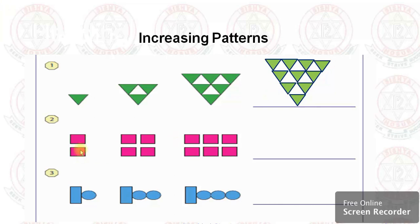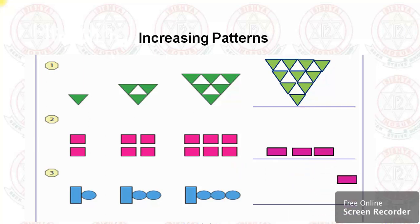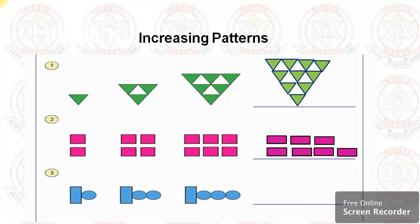How many rectangles? Two pink rectangles here, four here, six here — so it is like the two-times table: two, four, six. These are even numbers. So what will be next? Eight will come — two, three, four, five, six, seven, eight — so it is eight rectangles.